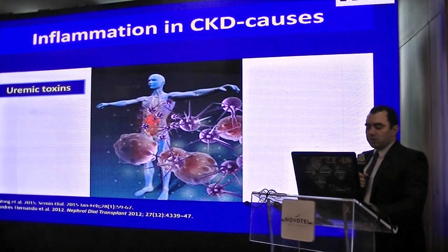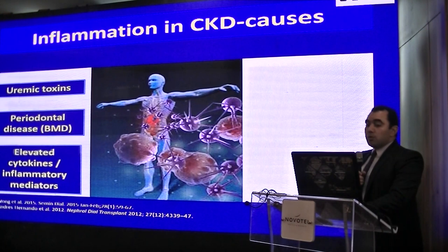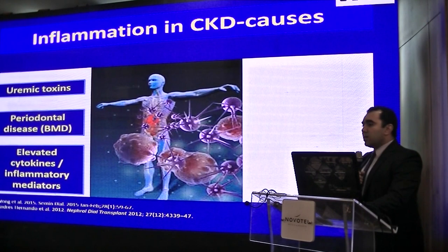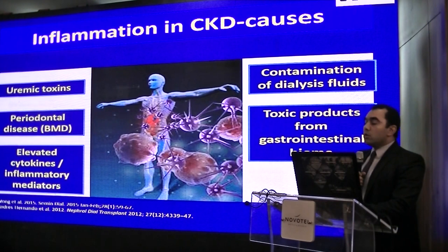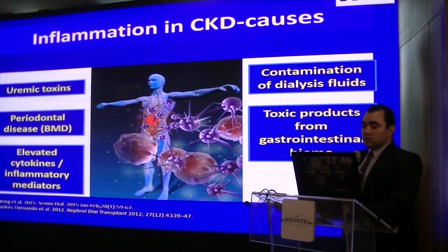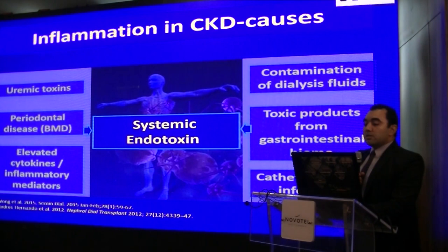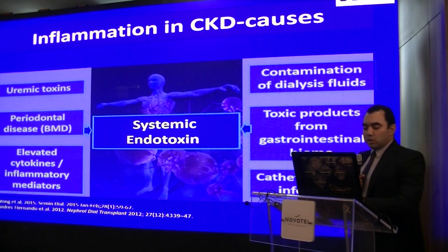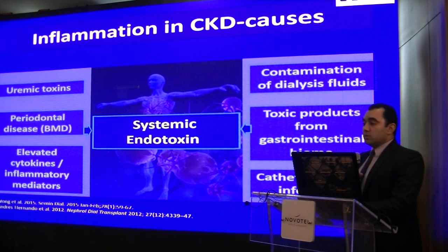First, uremic toxins; the periodontitis resulting from the associated mineral disorders; the elevated cytokines and inflammatory mediators due to the reduced renal clearance; the contamination of dialysis fluids; and the toxic products from the gastrointestinal biome, including the endotoxins and catheter-related infections. Systemic endotoxins have gained attention as a culprit of causing inflammation in CKD patients, mainly absorbed from the periodontitis and from the gastrointestinal biome.